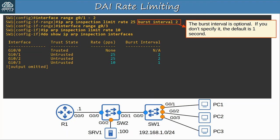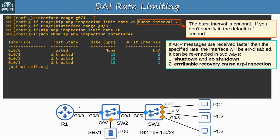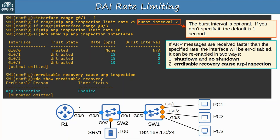If ARP messages are received faster than the specified rate, the interface will be error-disabled. Note that rate-limiting limits the rate that ARP messages are received on an interface, not sent by an interface. Interfaces disabled by ARP inspection can be re-enabled manually with shutdown and no shutdown, or with errdisable recovery. The command is errdisable recovery cause arp-inspection. I configured errdisable recovery on SW1, and as you can see it is enabled when I check with show errdisable recovery.